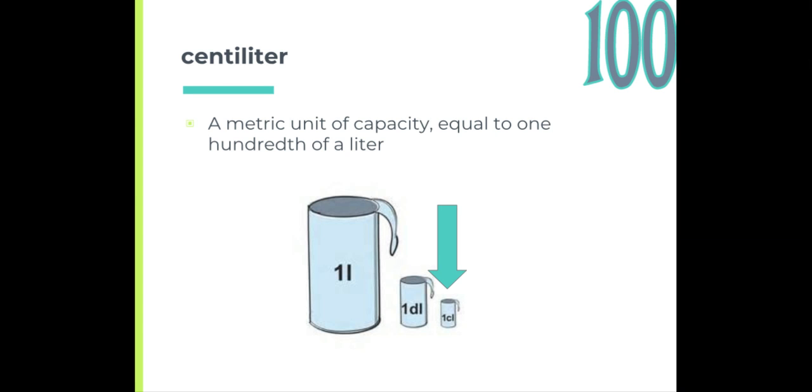A centiliter is a metric unit of capacity that is equal to one hundredth of a liter. So you can see a liter there and then you can see the centiliter. It is one one hundredth of a liter.